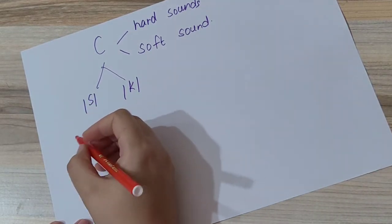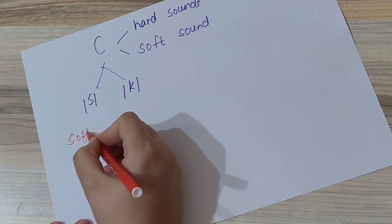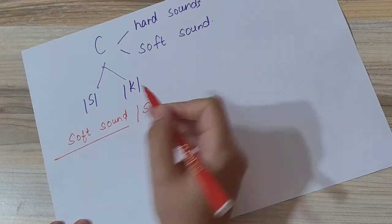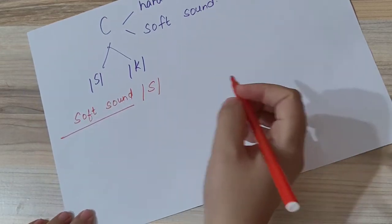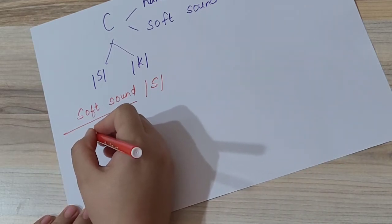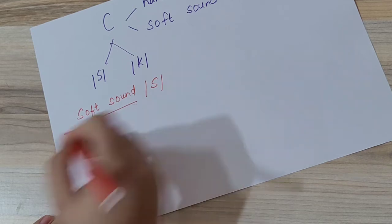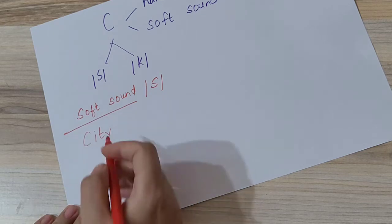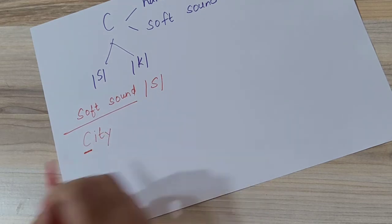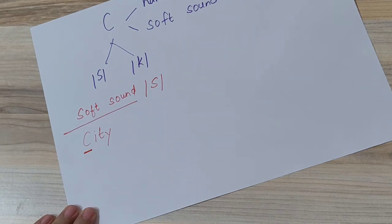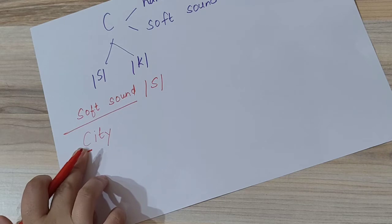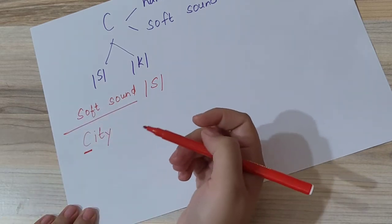First we will see letter C's soft sound, that is 'sa'. Suppose we have the word city. We have written the word city. This is called the soft sound of the letter C.